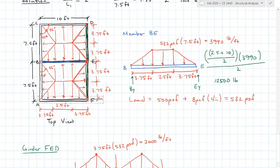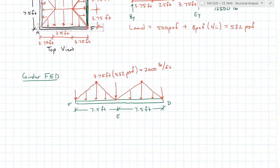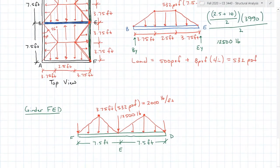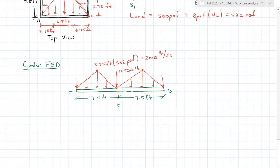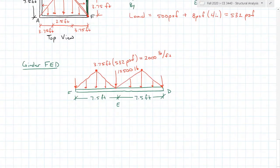That calculation gives 12,500 pounds, so both E and B reactions equal 12,500 pounds, which we plug in as the point load at E on girder FED. Members AF and CD carry half the load of BE, so those point loads are 6,250 pounds on either of those sides. That completes the free body diagram for girder FED.